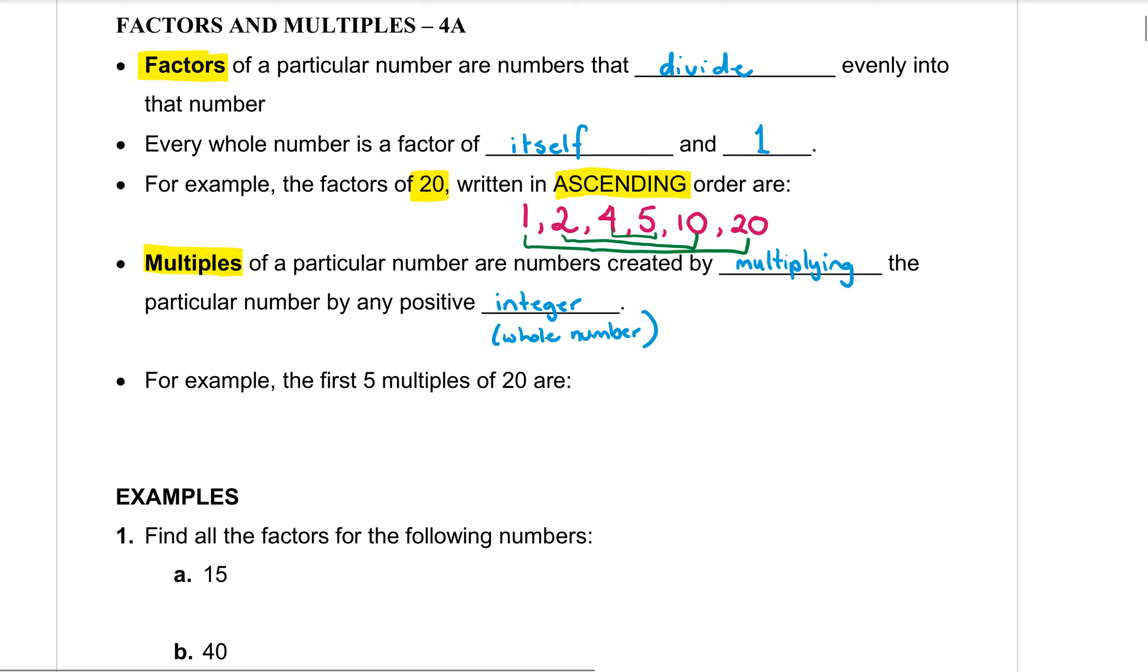So if I want to find the first five multiples of 20, my first one, my first multiple of 20 is 20 itself. It's basically 20 times 1 which is 20. Then I want to increase from there, I want to go 20 times 2 which is 40. Then 20 times 3 which is 60. 20 times 4 which is 80. And 20 times 5 which is 100. And that is the first five multiples of 20.